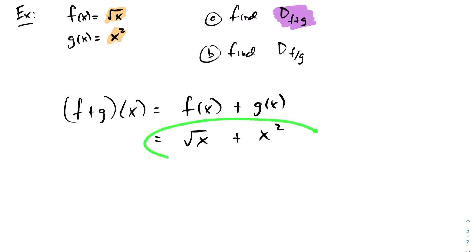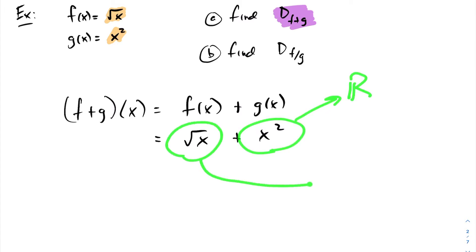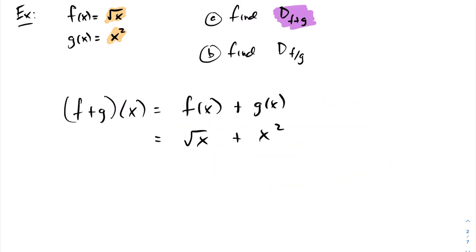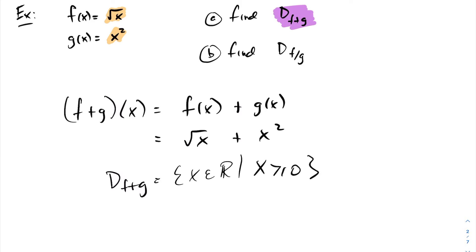To find the domain of f plus g, both expressions must be defined. If we just focus on x², the domain would be all real numbers. But the square root function is not defined when x is less than zero, as you can't take the square root of a negative number. Both x² and √x must be defined on the domain, so we take the intersection. The domain of f plus g is all real numbers such that x ≥ 0, because while g(x) is fine for negative values, f(x) is not.